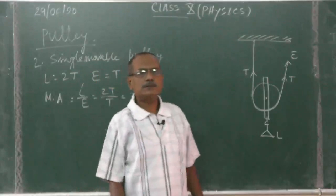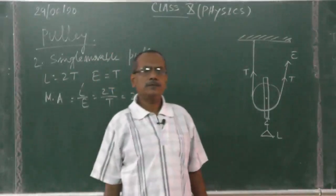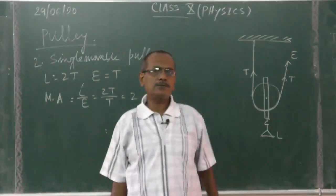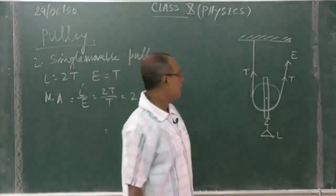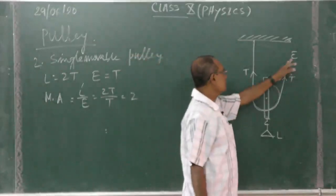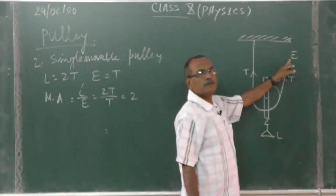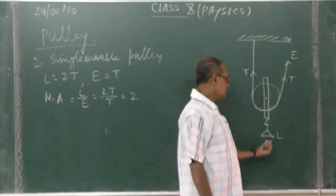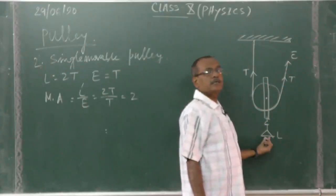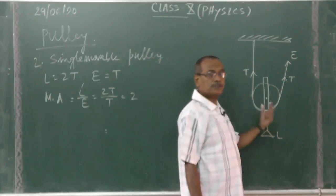Mechanical advantage is 2, it means for ideal pulley system if we are applying 5 Newton force effort, then we can lift 10 Newton of load, just double.